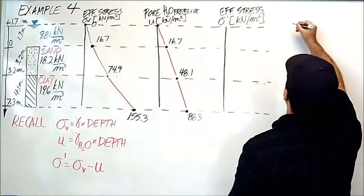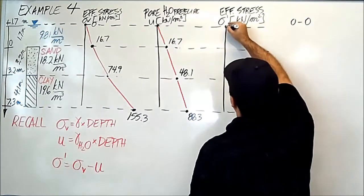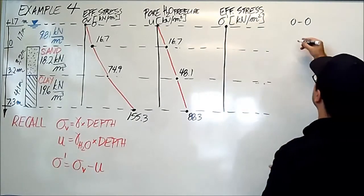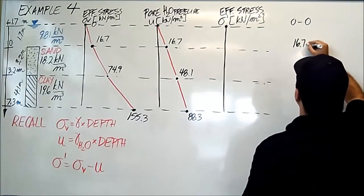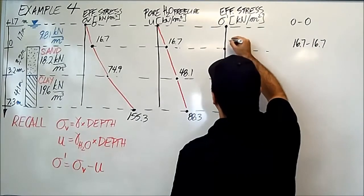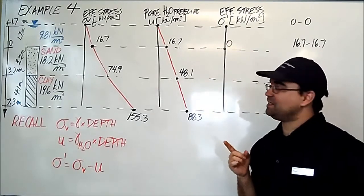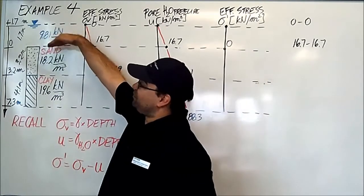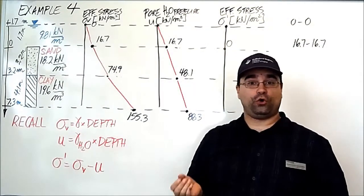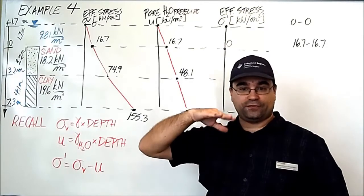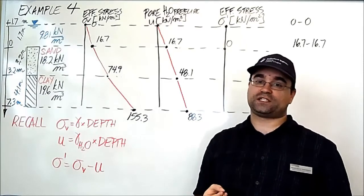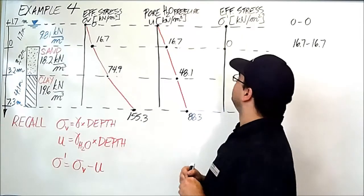Let's start from the top one: zero minus zero equals zero. Let's move down to here. We have 16.7 minus 16.7 equals zero. So what's happening, as you can see here, because we have a flood situation, in terms of effective soil stress, the weight of the water and the buoyancy of the water counteract to give you zero effective stress on the soil.